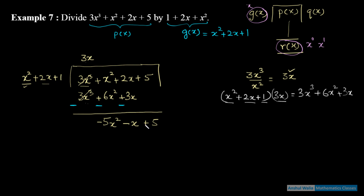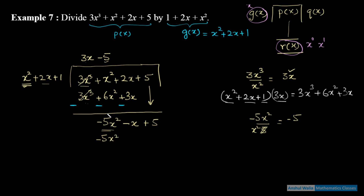अब -5x² को x² से divide: -5 आएगा। -5 से पूरे g(x) को multiply: -5x² - 10x - 5। Signs change करके subtract करते हैं। -5x² cancel, -x + 10x = +9x, और +5 + 5 = +10। तो remainder = 9x + 10।